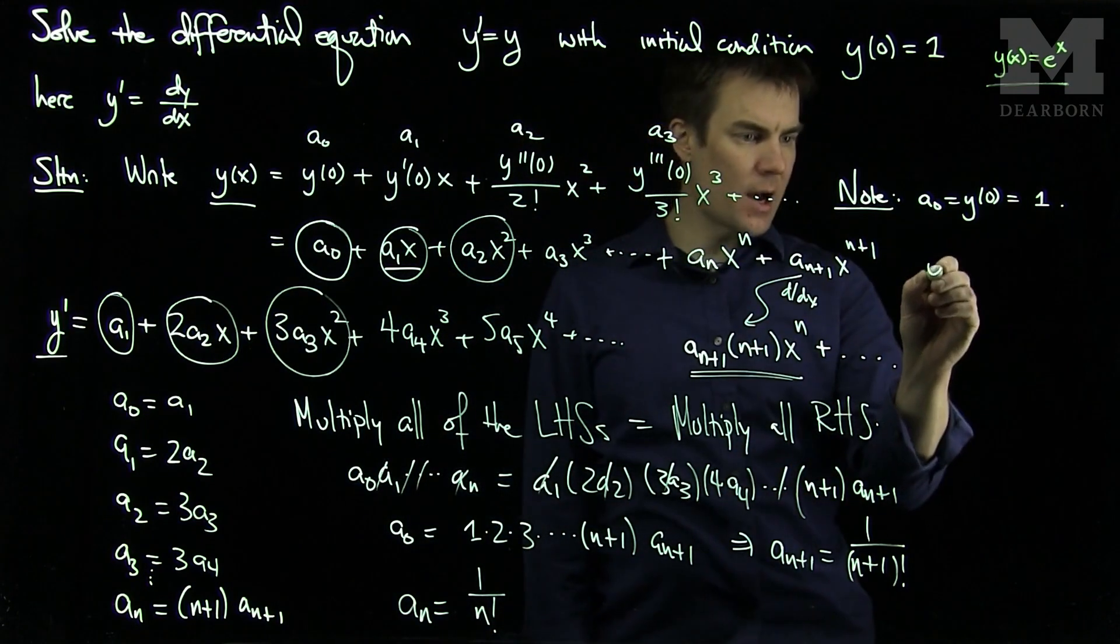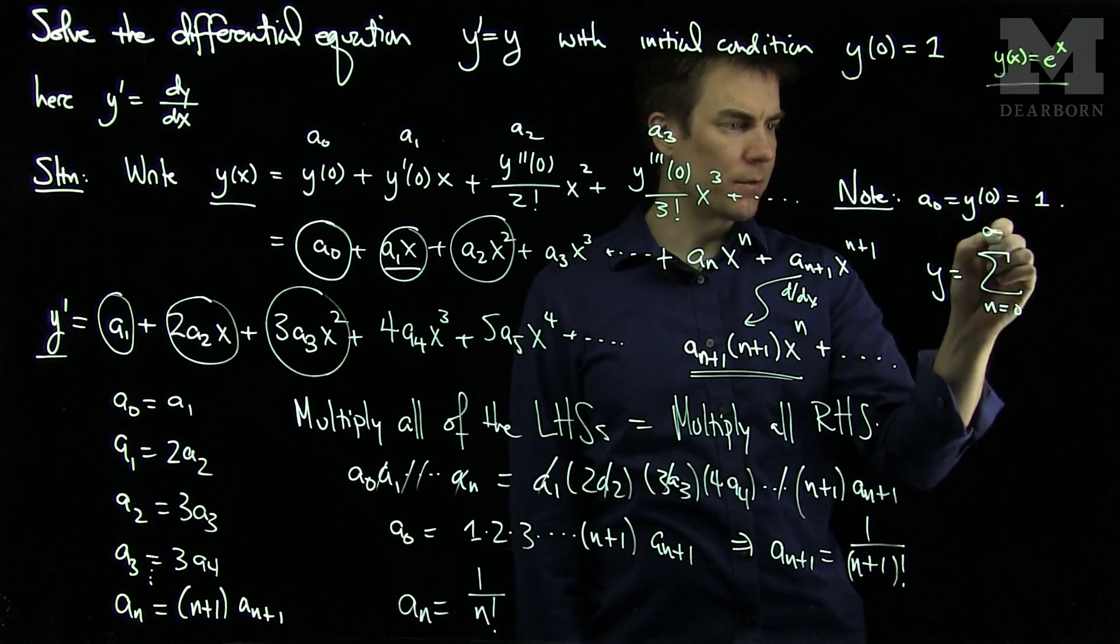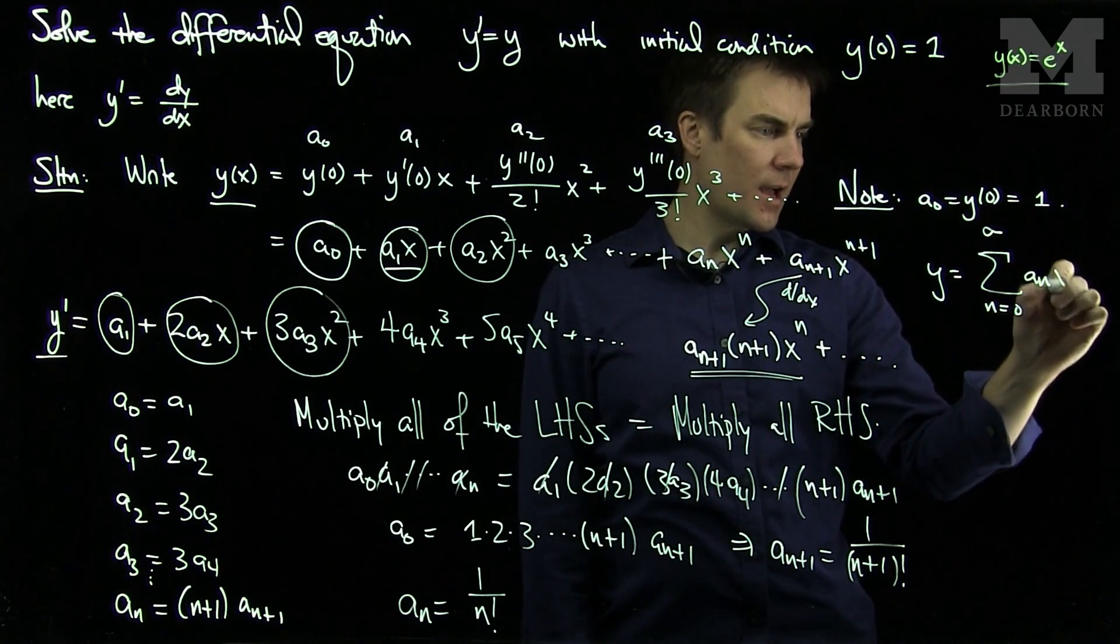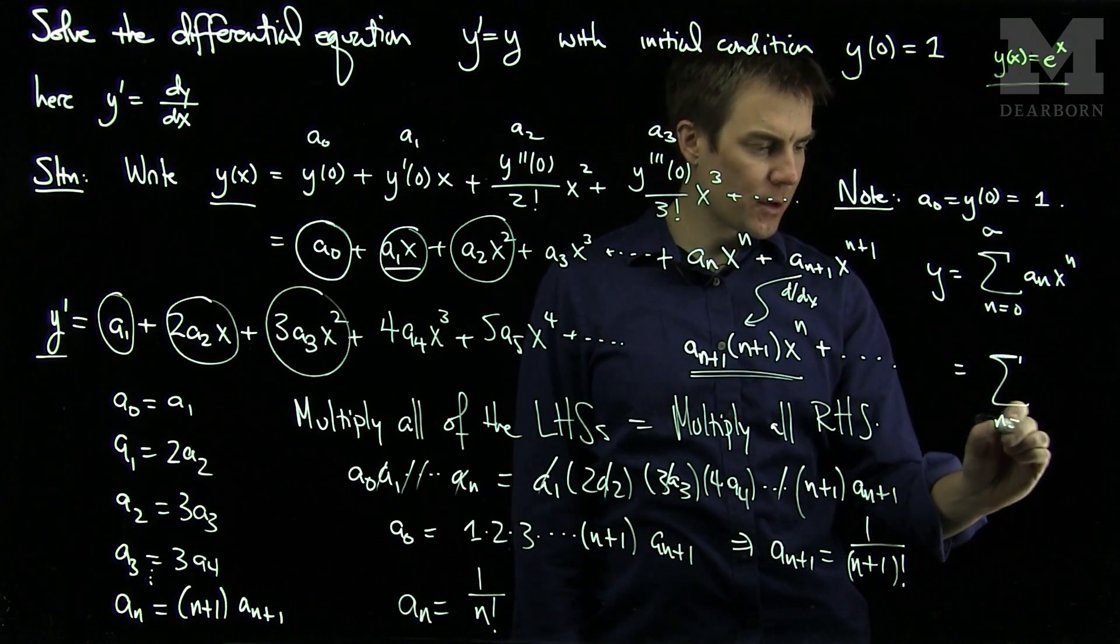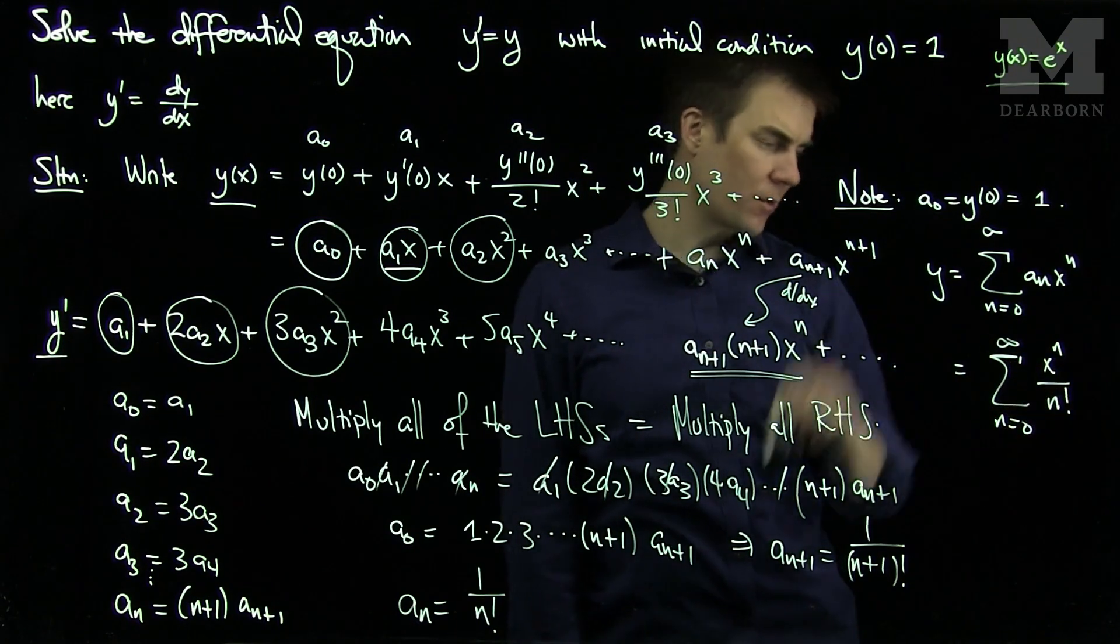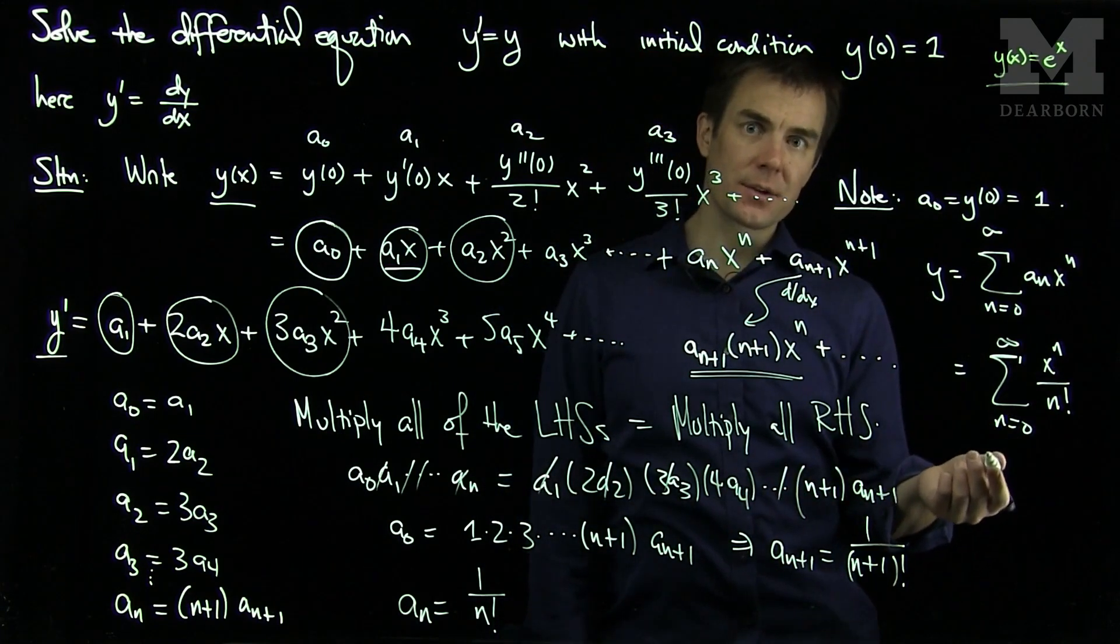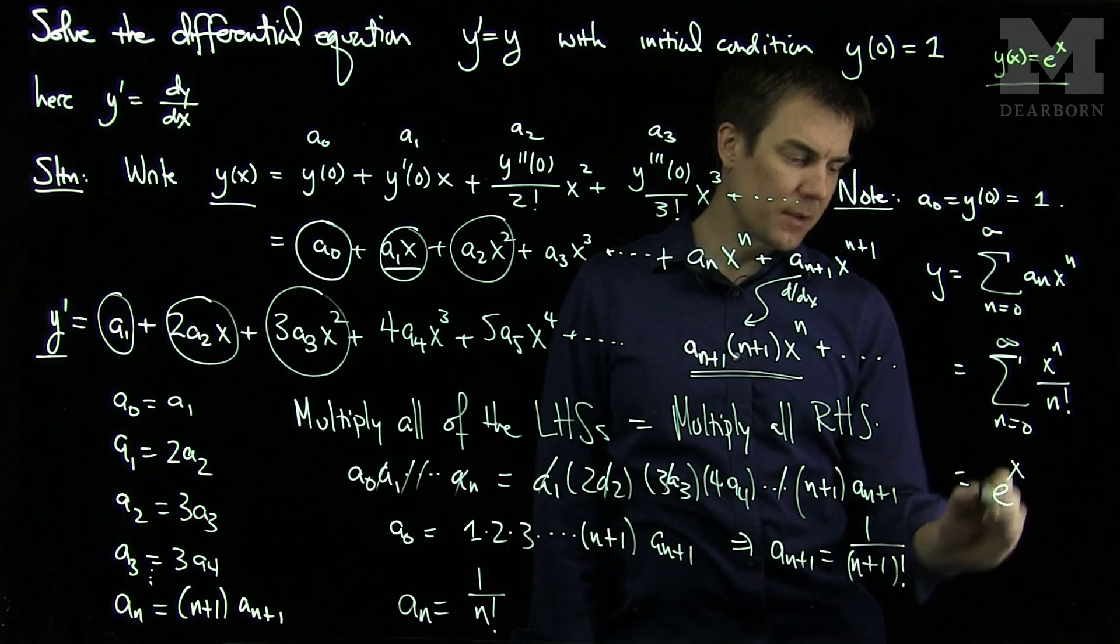And that tells me, therefore, that y is equal to the sum n goes from 0 to infinity of anx to the n, which is the sum n goes from 0 to infinity of x to the n over n factorial. And this is the Taylor series expansion for e to the x centered at 0. So this is just going to be e to the x.